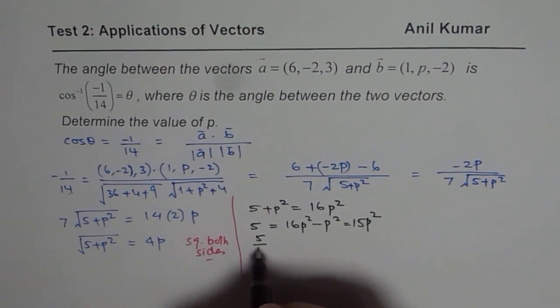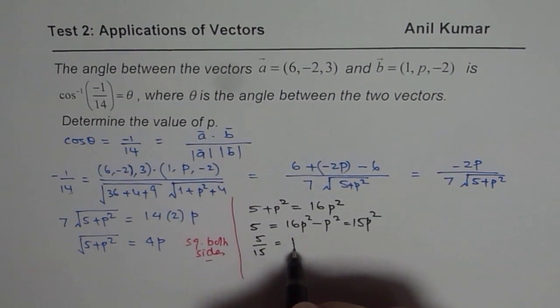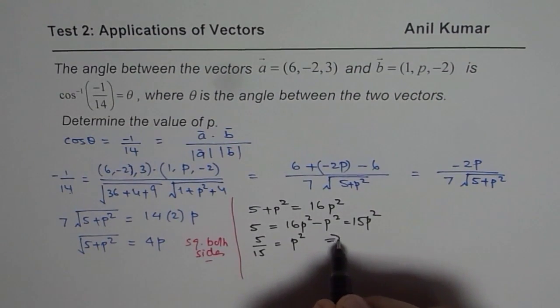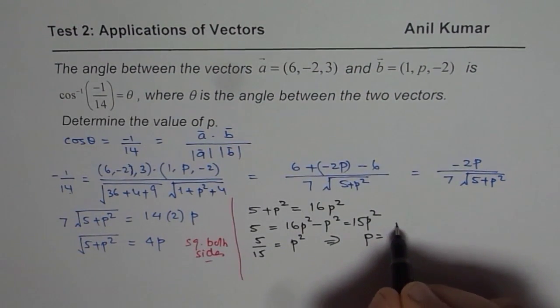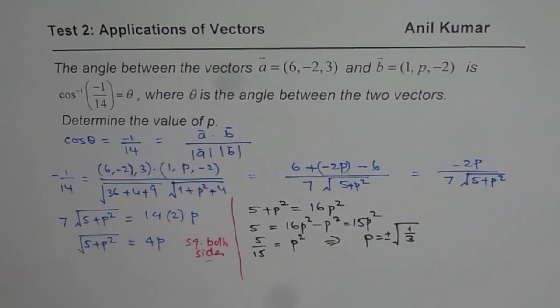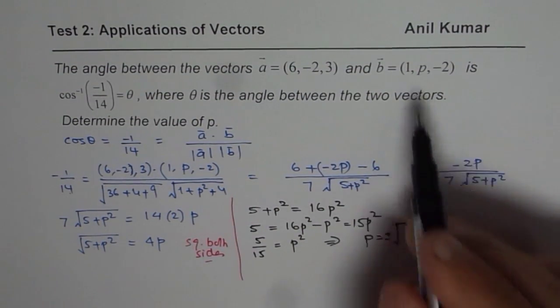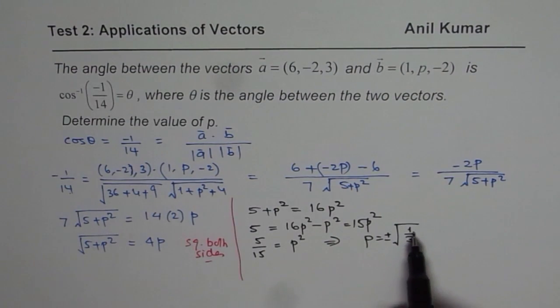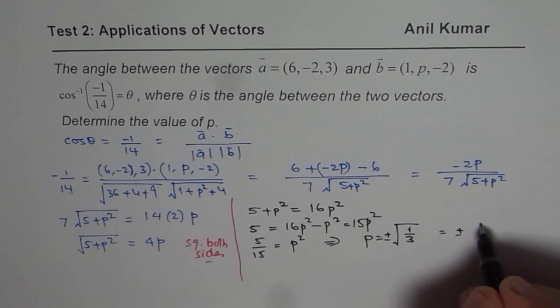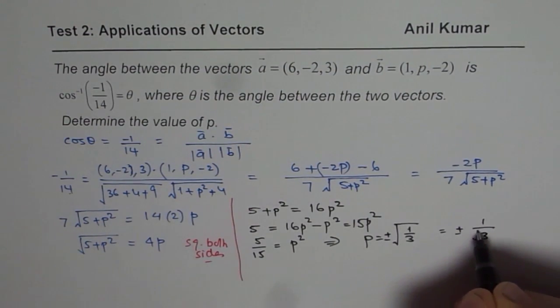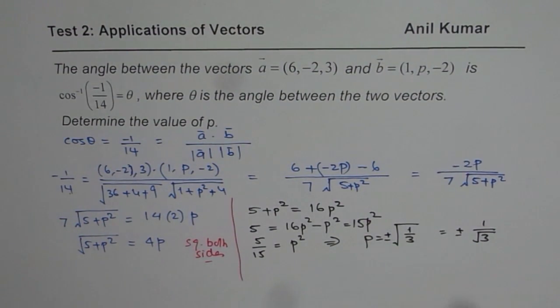Now dividing we get 5 over 15 equals to p squared and that implies that p equals square root of 1 over 3 with plus and minus sign. So that becomes the answer for p. So p could have these two values, plus or minus 1 over square root of 3. You could also rationalize and write square root of 3 over 3. So either way, that is the value of p. Thank you and all the best.